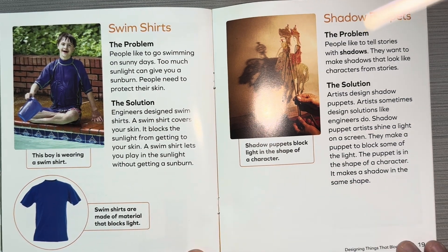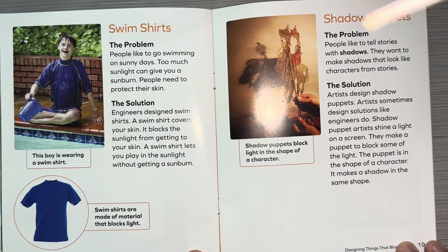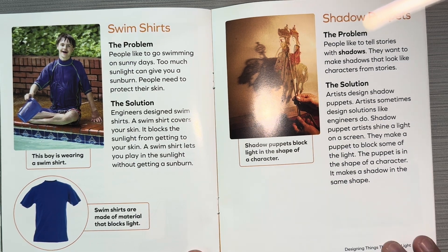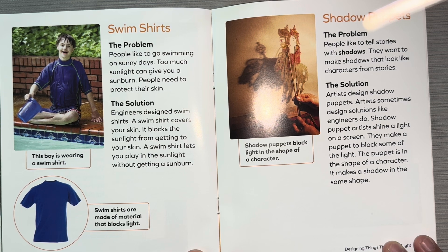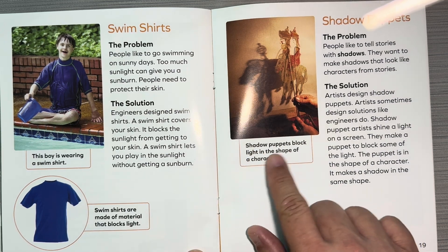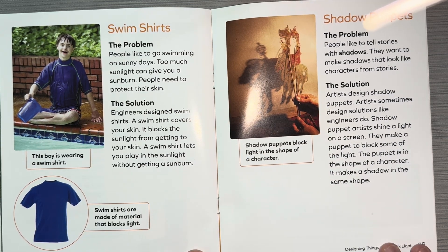Shadow puppets. The problem: people like to tell stories with shadows. They want to make shadows that look like characters from stories. The solution: artists designed shadow puppets. Artists sometimes design solutions like engineers do. Artists shine a light on a screen and make a puppet to block some of the light. The puppet is in the shape of a character, and it makes a shadow in the shape of that character. Shadow puppets block light in the shape of a character.